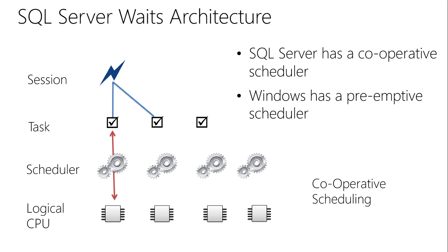In contrast, Windows has a preemptive scheduling model. Windows is a general-purpose operating system written for multiple programming languages, multiple applications, and multiple uses — there's nothing to optimize it specifically for any particular application. In a preemptive scheduler model, you get a time slice for your execution, and whether it's convenient or efficient for you to stop, you'll get kicked off to let somebody else have a go.